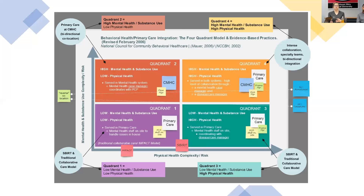In quadrant four, collaboration needs to be much more intense than in any other quadrant. These fully integrated practices exist but aren't as common. For patients in this quadrant, the benefit is greatest. When we don't have that kind of system but still have those patients, we have to start thinking creatively — how do we create a team where one doesn't naturally exist, or where we don't have the funding to make one exist? We have to be innovative. There are many practices across Ohio that have been doing some pretty cool and innovative things.